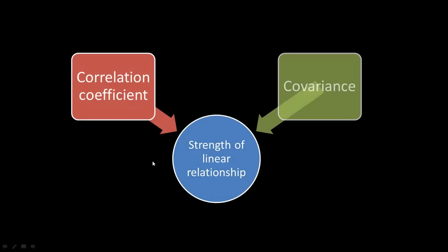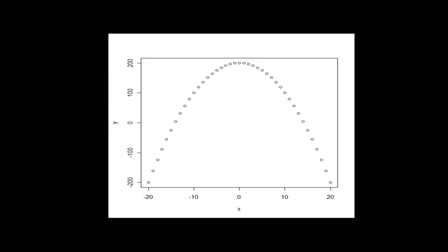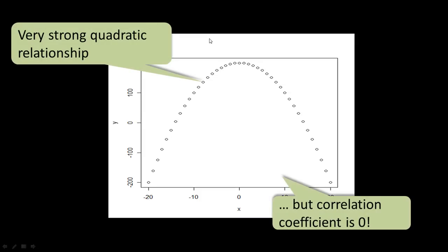Both correlation coefficient and covariance only measure the strength of linear relationships, not any other kind. For example, two variables x and y related in a perfectly predictable quadratic fashion will give a correlation coefficient of 0 because there is no linear relationship. Generally in statistics we look for linear relationships because they are easily calculated, but in the real world there are many nonlinear relationships that correlation will not capture.